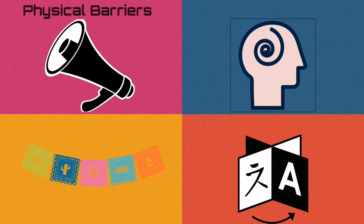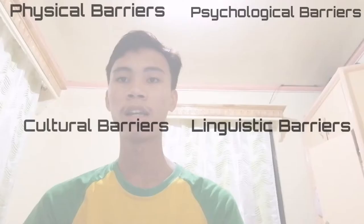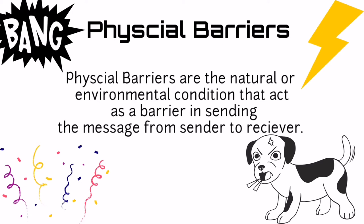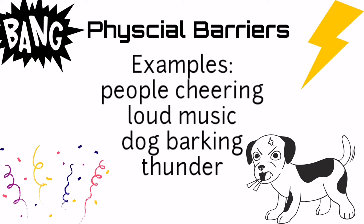These four types of barriers are physical barriers, psychological barriers, cultural barriers, and linguistic barriers. Now let us talk about the physical barriers first. Physical barriers are the natural and environmental conditions that act as a barrier in sending the message from sender to receiver.